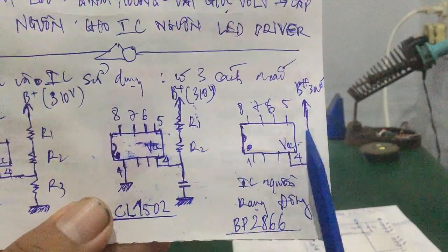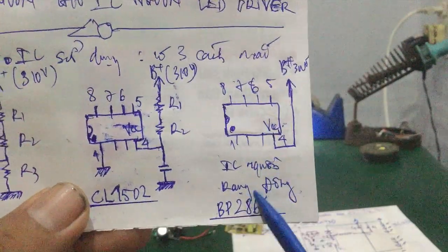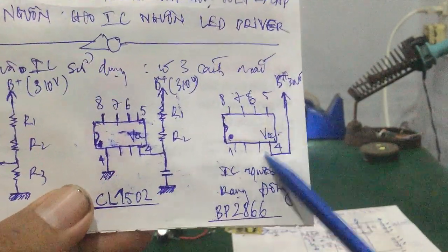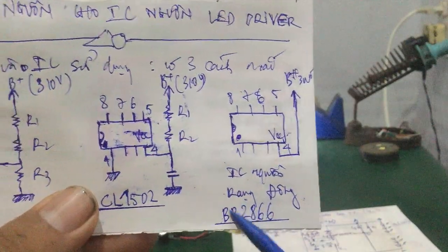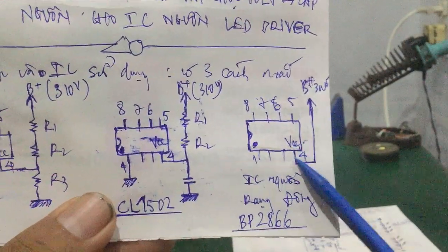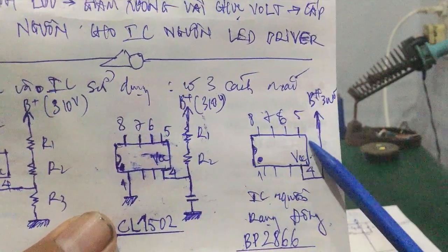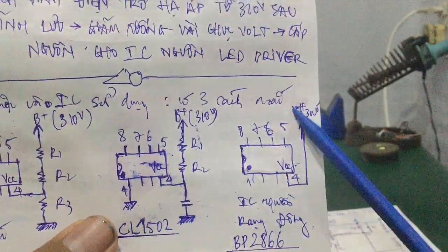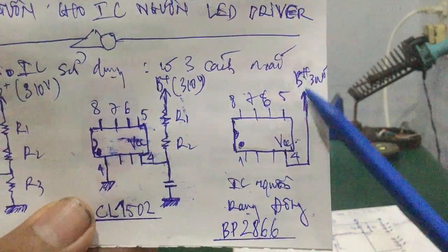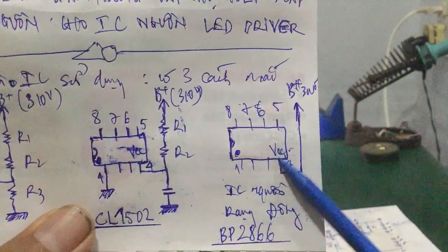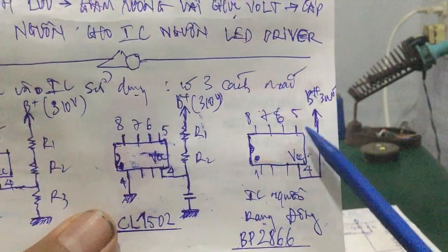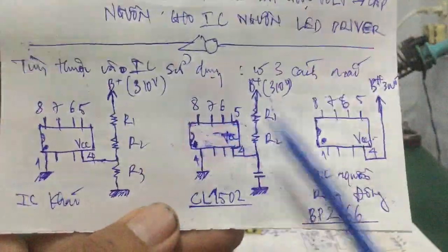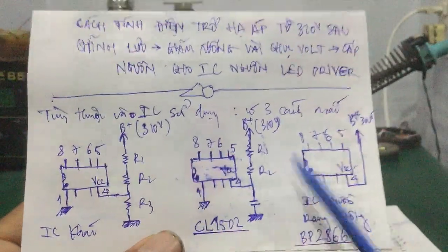Mình đi qua con IC nguồn thứ 3, gọi là IC nguồn Rạng Đông, dành cho những cái đèn LED Rạng Đông, nó dùng con BB2866. Thì chân số 4 VCC của IC nguồn LED driver này nó không qua điện trở, nó câu thẳng lên B cộng luôn - có nghĩa là B cộng cấp nguồn cho IC này luôn, không qua điện trở hạ dòng hay điện trở hạ áp. Đây là 3 cách mắc thông dụng của từng mạch LED driver có trên thị trường.